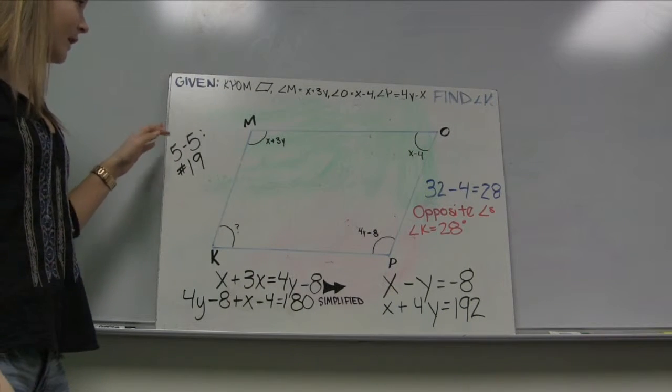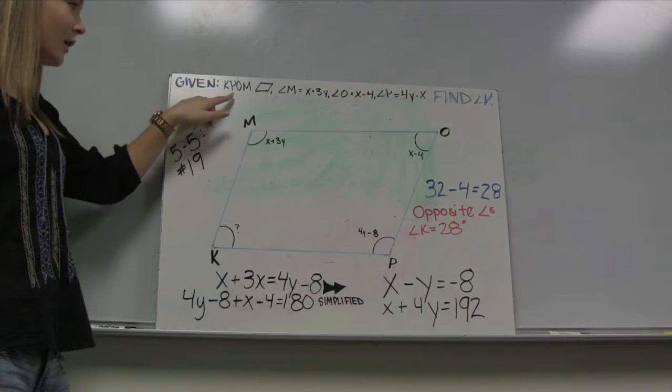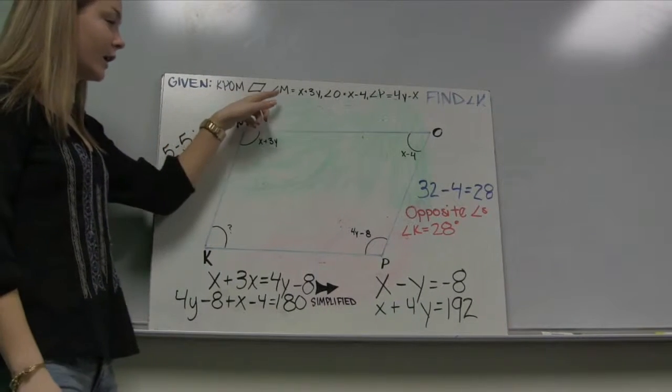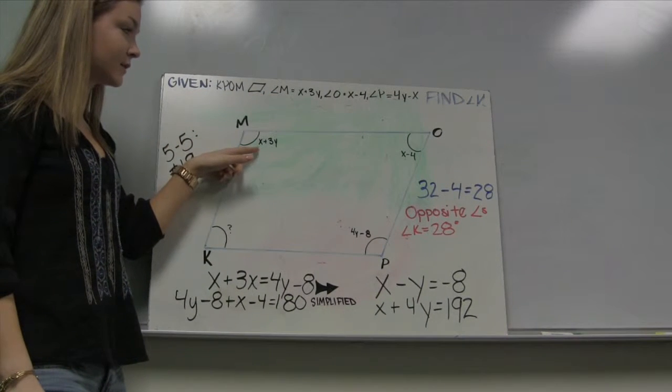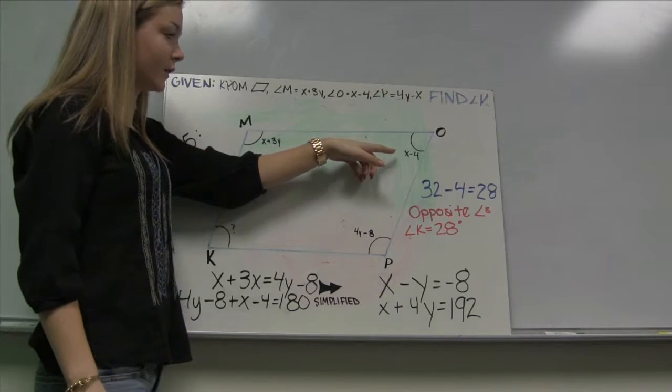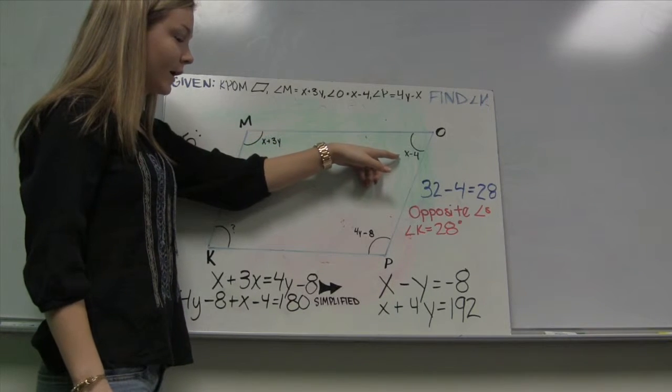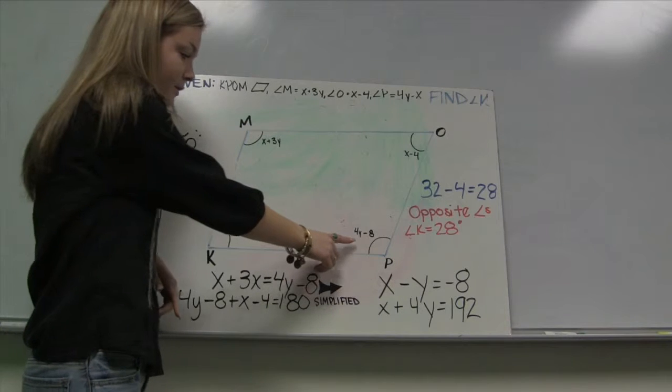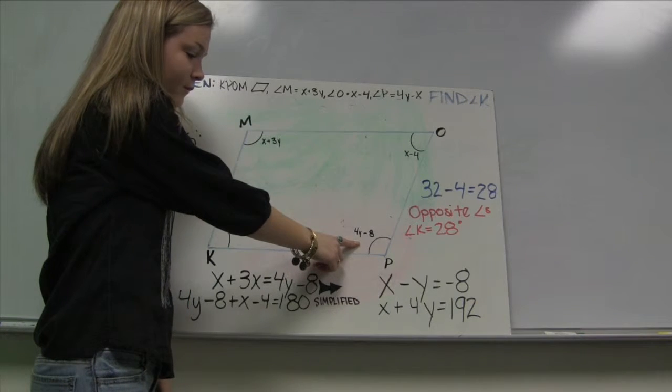We did problem 19 from 5-5 and our givens were that KPOM is a parallelogram and the measure for angle M, which is this one, is x plus 3y. The next value we got was for angle O and we got x minus 4, and the other given was that the measure for angle P is 4y minus 8.